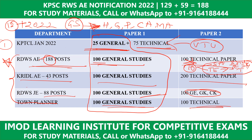For the KRIDL notification, Town Planners are also included. If you need to focus on GS, only for RDWS GE you need to use Rural Development and Panchayat Raj Institutions for the remaining parts. If you need to prepare the Technical, I will explain that next.